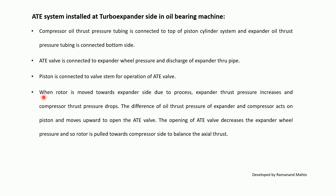When the rotor moves towards the expander side due to process conditions, expander thrust pressure increases and compressor thrust pressure drops. The difference in oil thrust pressure between expander and compressor acts on the piston and moves it upward to open the AT valve. Opening the AT valve decreases the expander wheel pressure, so the rotor is pulled towards the compressor side to balance the axial thrust.